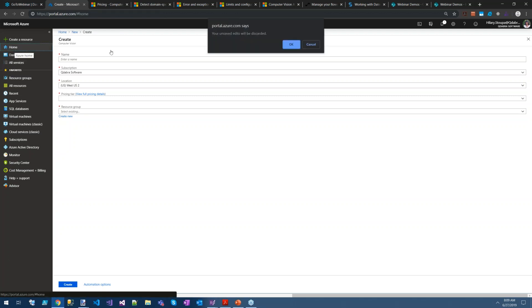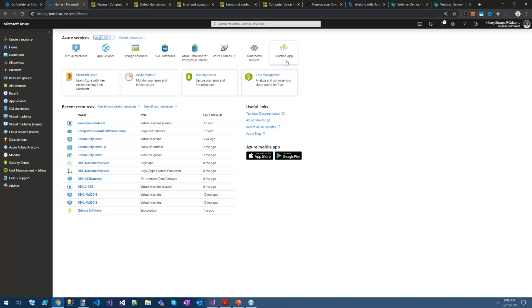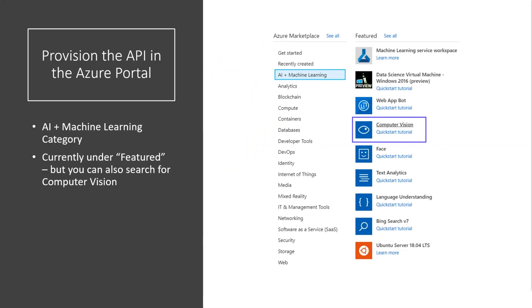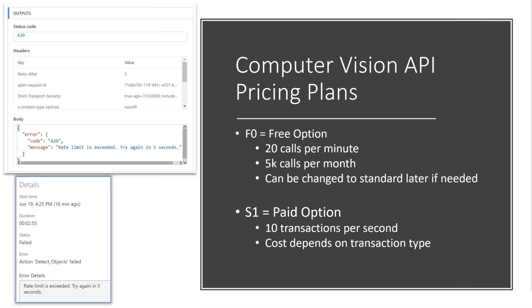It does some processing and then gets your API created. Let's take a look at pricing. F0 is your free option: 20 calls per minute and 5,000 calls per month. If you start hitting the limits and need to change, you can then switch to S1.